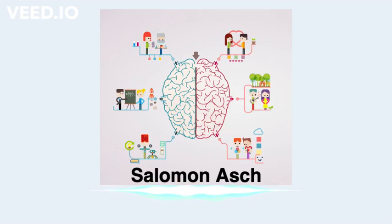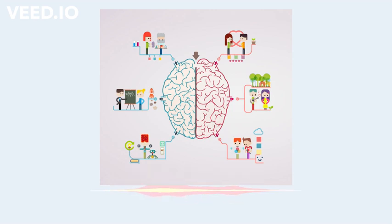Asch was influenced by Gestalt approaches relating to thinking, association, and perception. His mentor was Max Wertheimer, one of Gestalt psychology's founders, and he worked with Köhler, another founder of Gestalt.